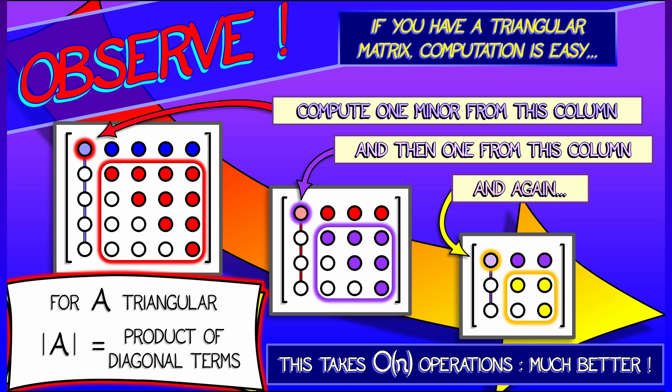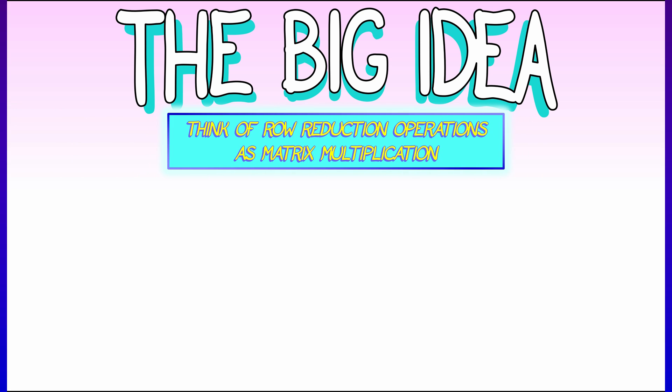And that is a great relief because that really only requires a linear number of operations. That is so much better from a computational complexity point of view. So here's the big idea. We're going to take a general square matrix, row reduce it down to an upper triangular matrix, and then compute the determinant from that.